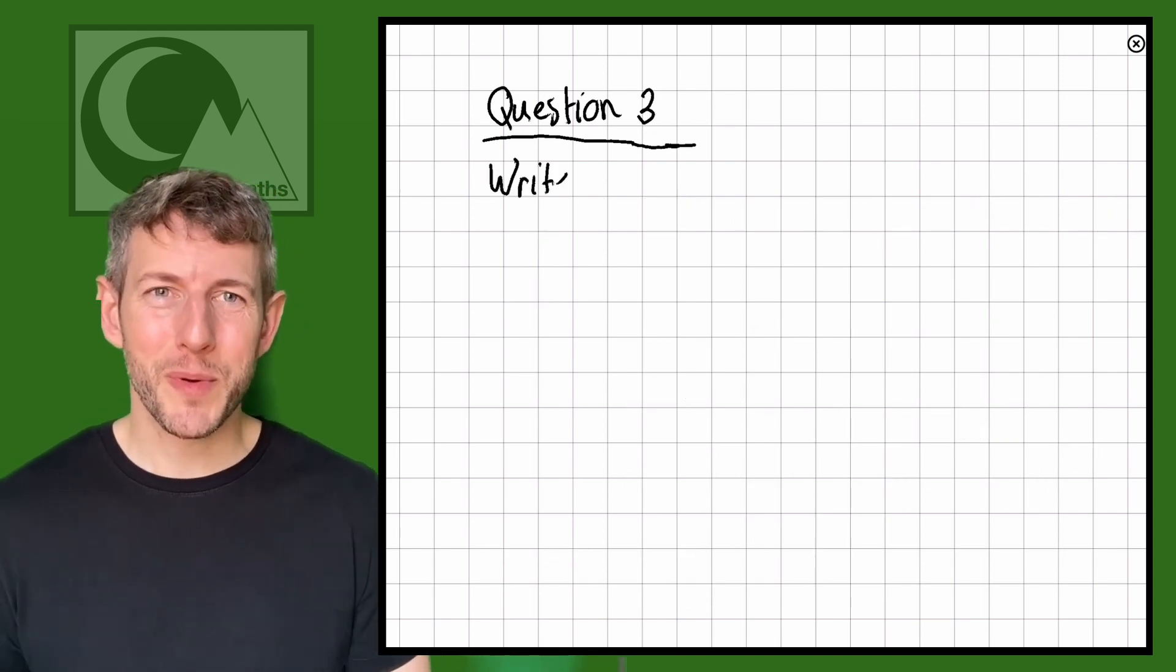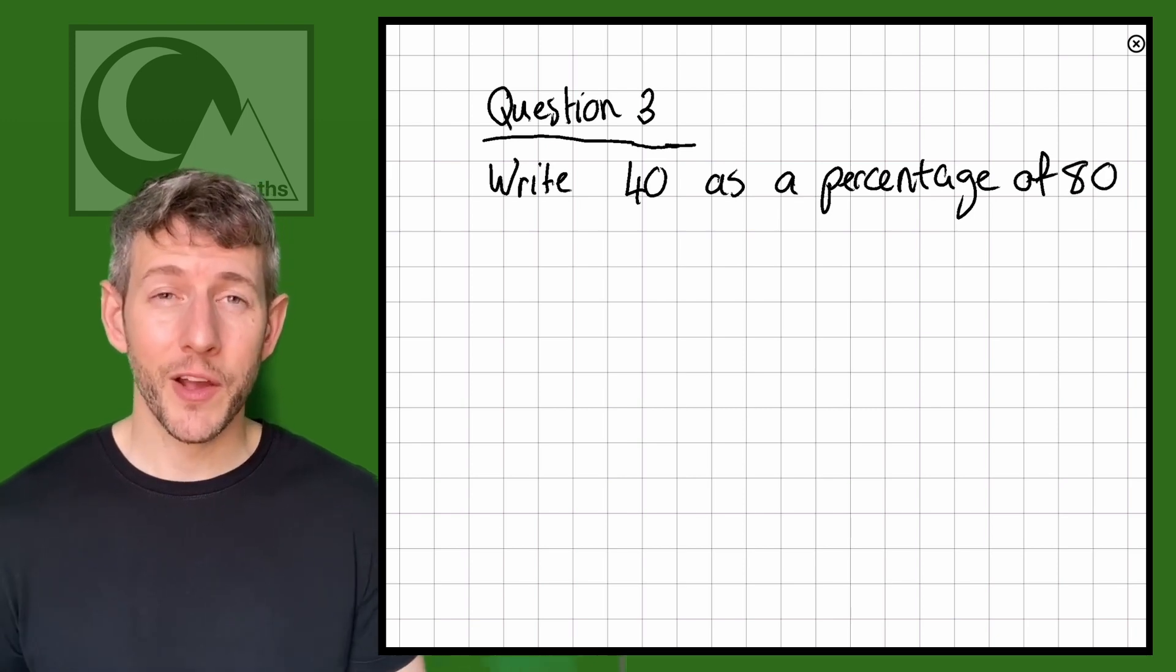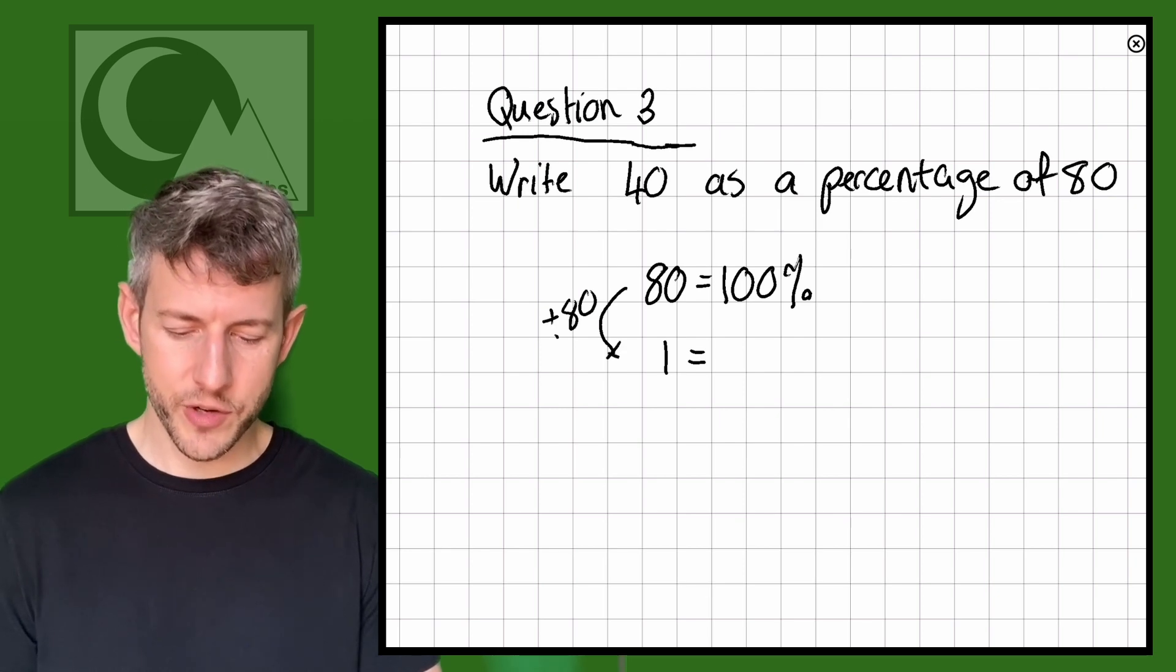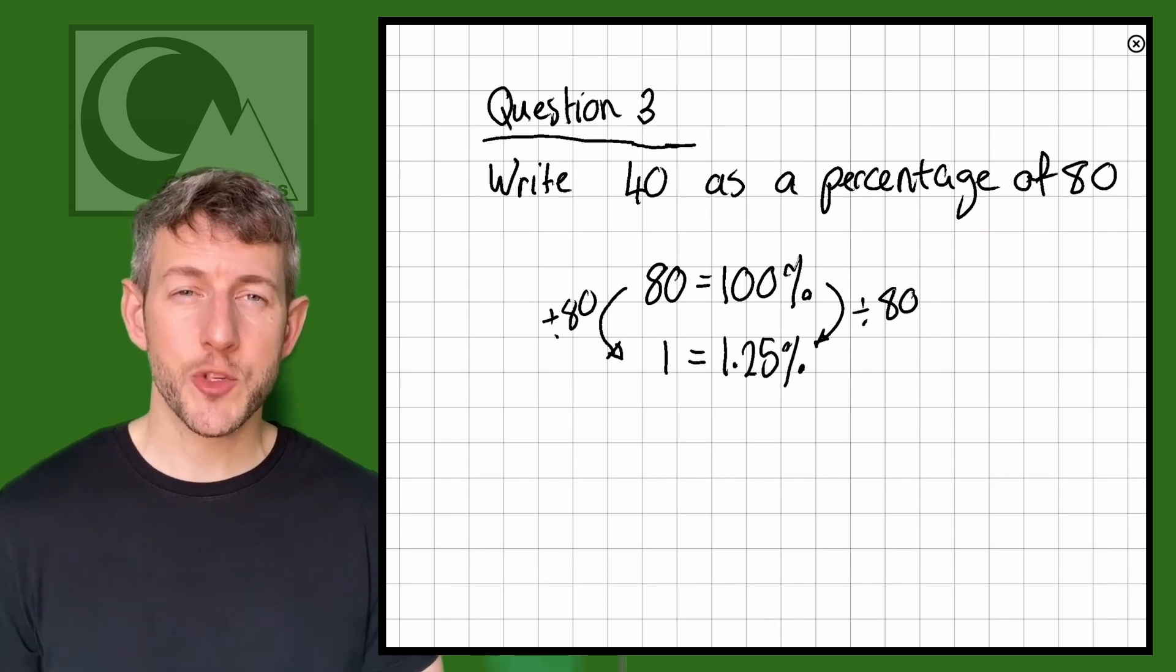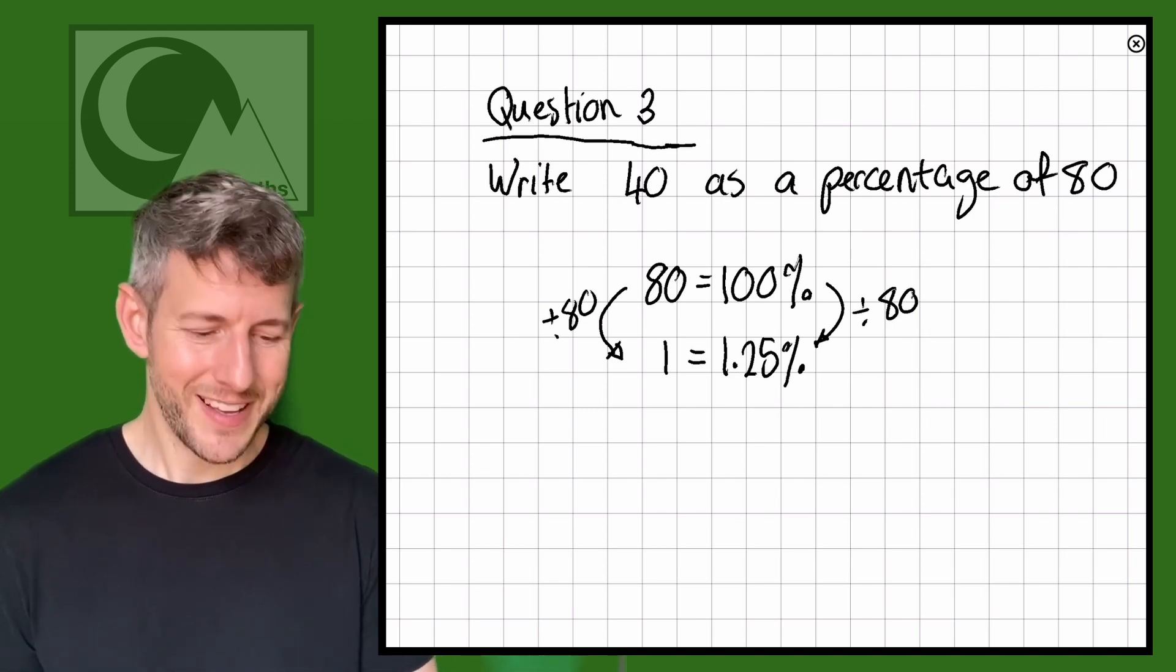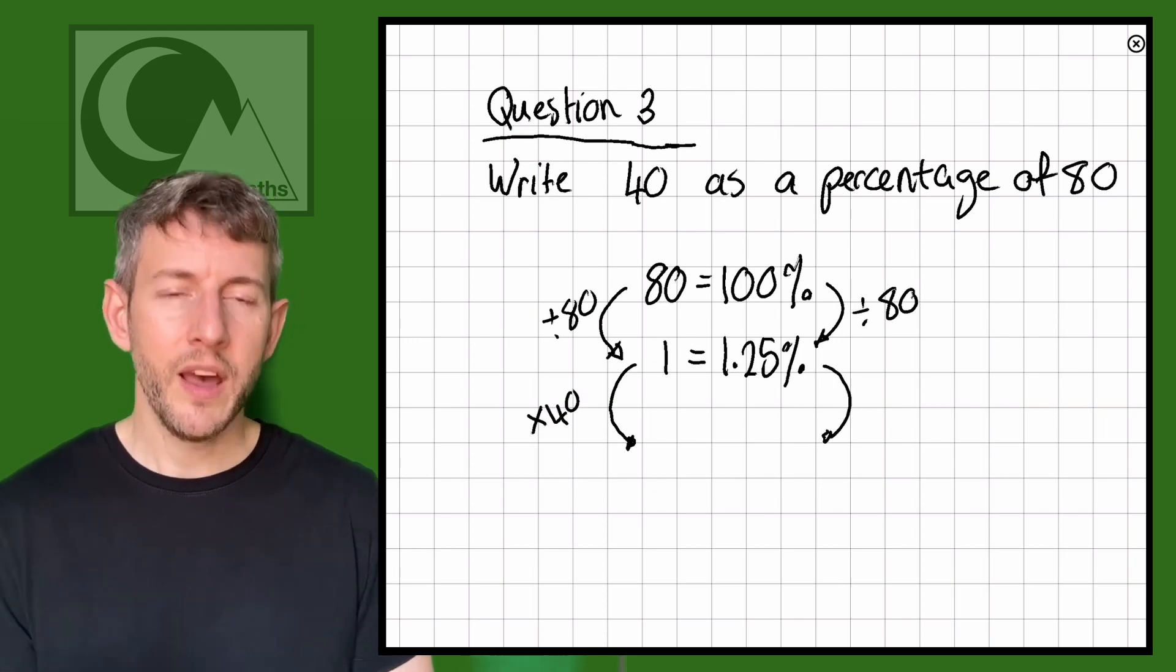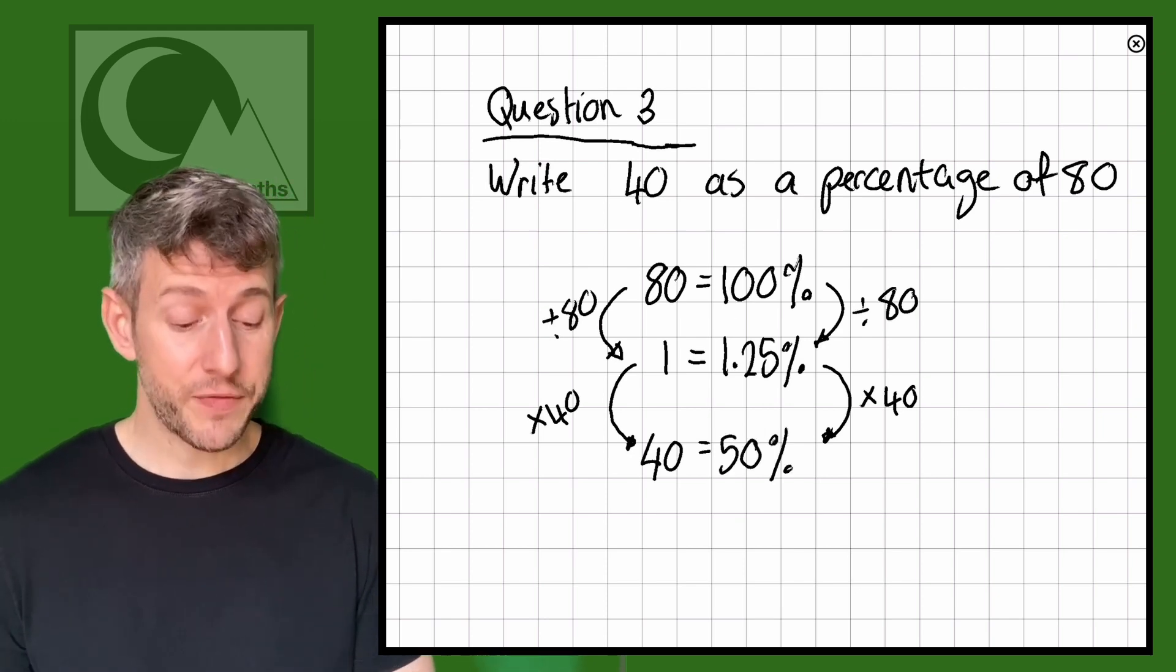Okay, let's move on to question three. So here we go, write 40 as a percentage of 80. So again, this time, 80 equals 100%. Now let's divide it by 80 to find out how much 1 is worth. So 100 divided by 80 equals 1.25. So we know in this situation, 1 has a value of 1.25%. And now that we know that 1 is worth 1.25%, we can times that by 40. Because 40 times 1 gives us the 40, and 1.25 times 40 equals 50. So again, we can see that 40 is 50% of 80.